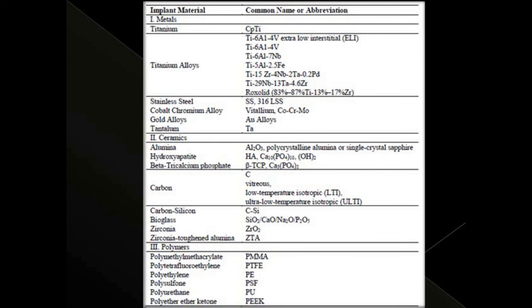There has been significant advancement in the materials used to fabricate implants. Under metals: titanium, titanium alloys, stainless steel, cobalt-chromium alloy, gold alloys, and even tantalum have been used. Under ceramics: advancement started with alumina and has reached zirconia-toughened alumina. Under polymers: from polymethyl methacrylate up to polyether ether ketone, or PEEK implants.